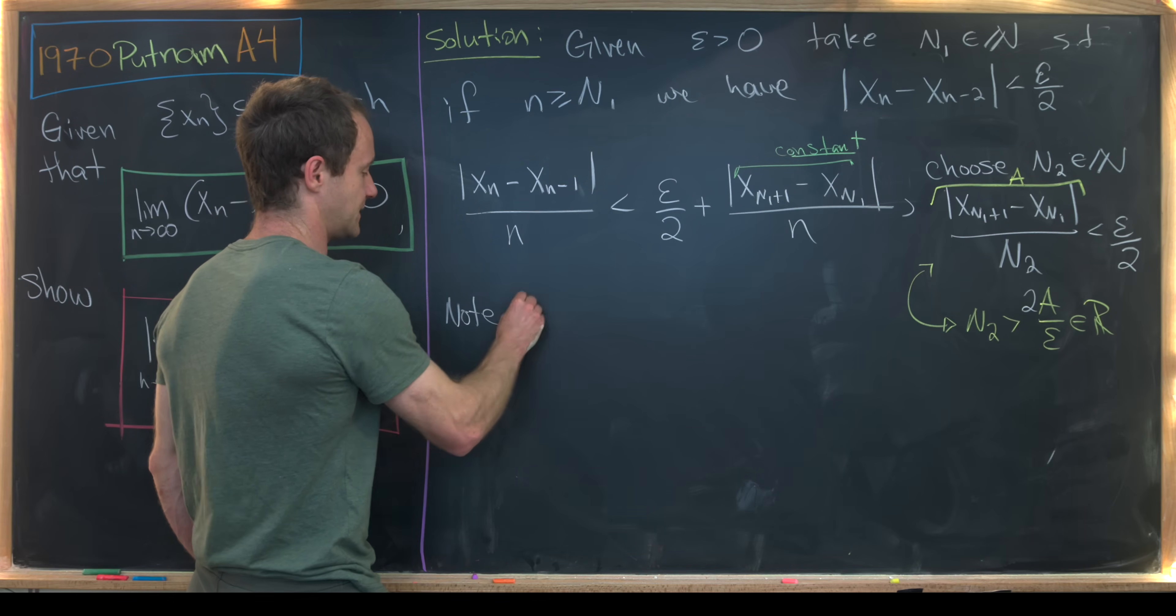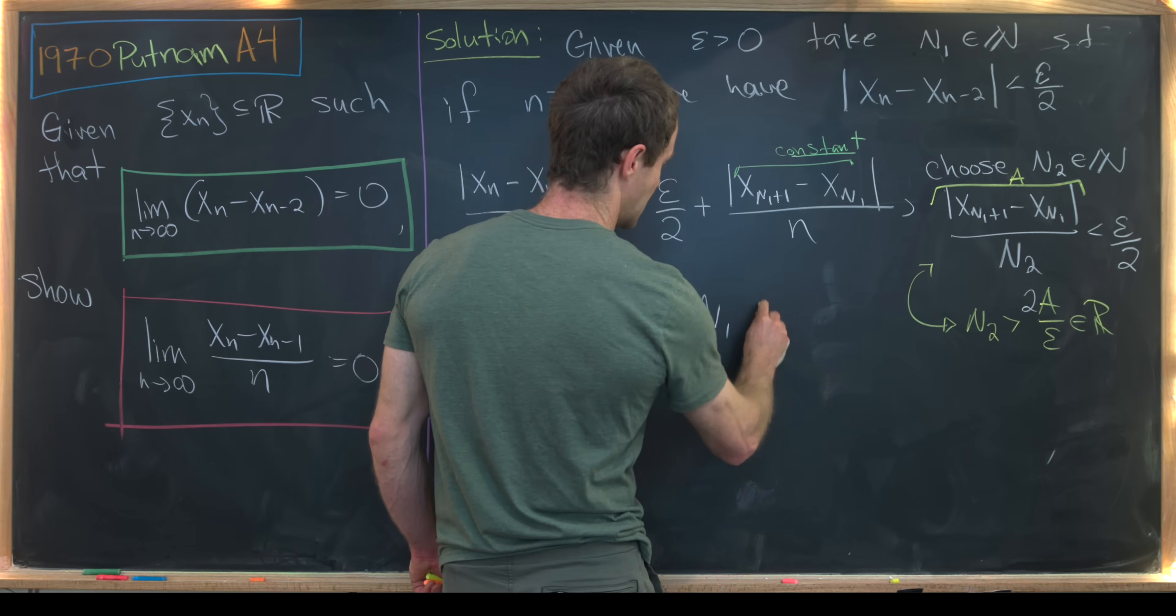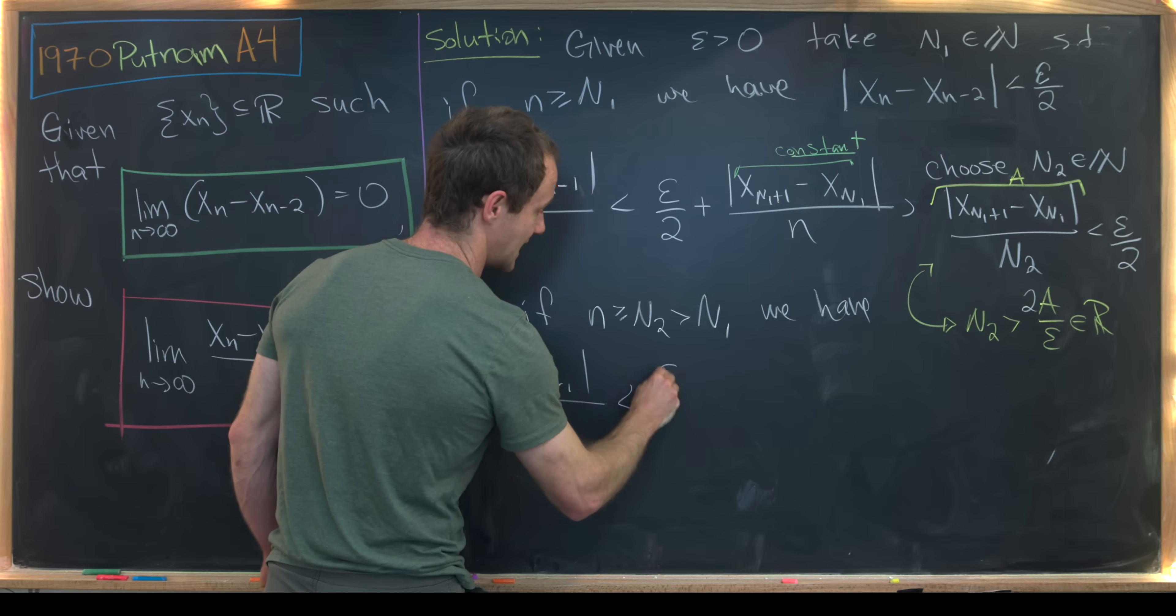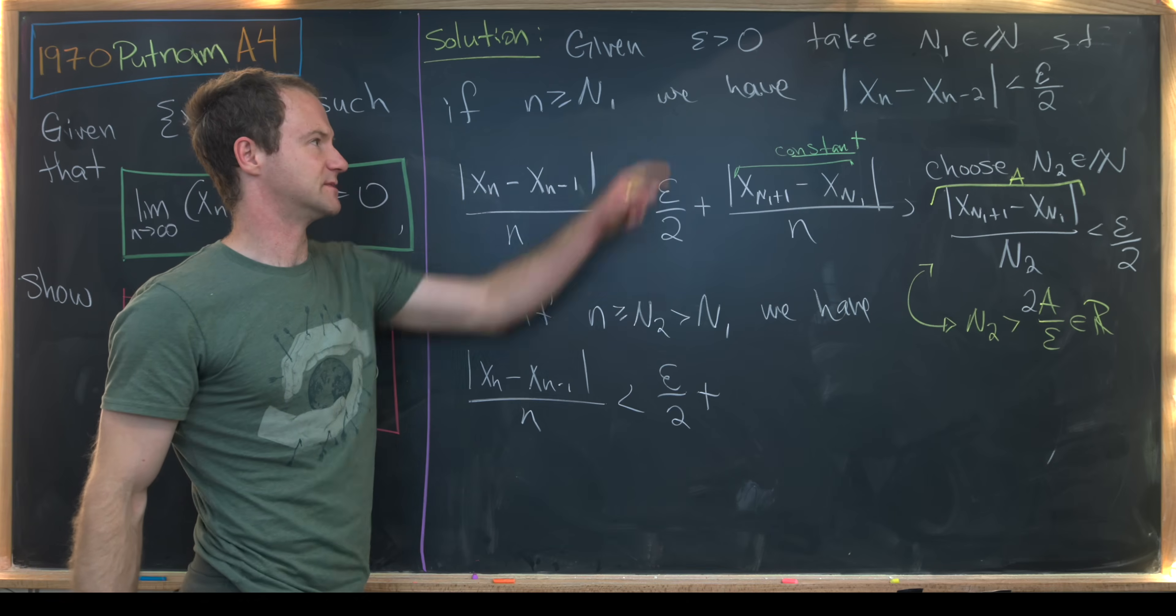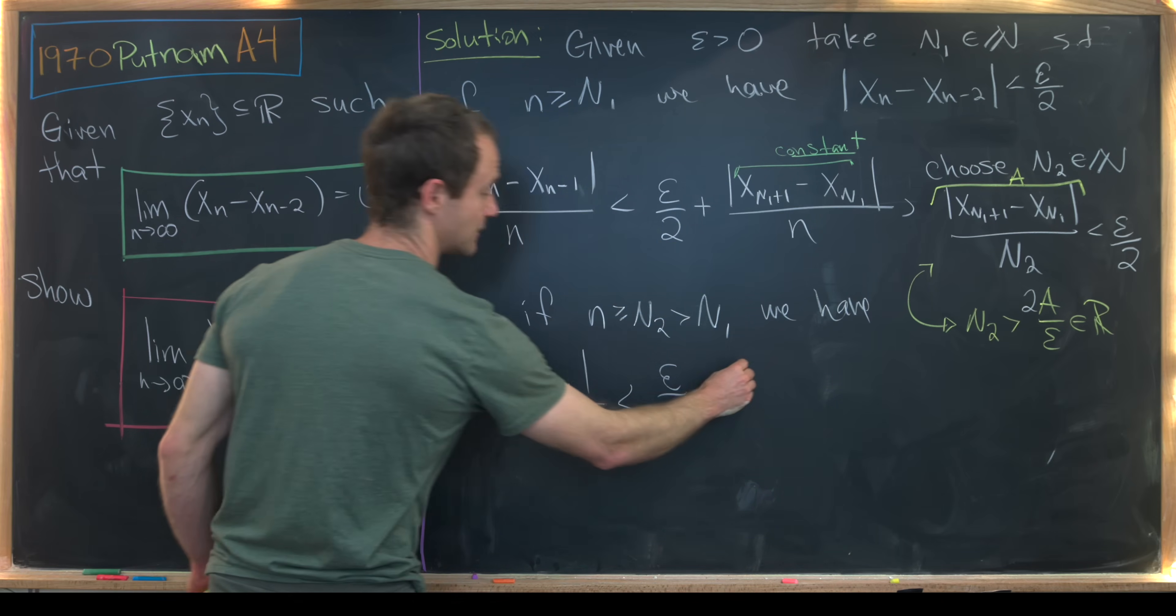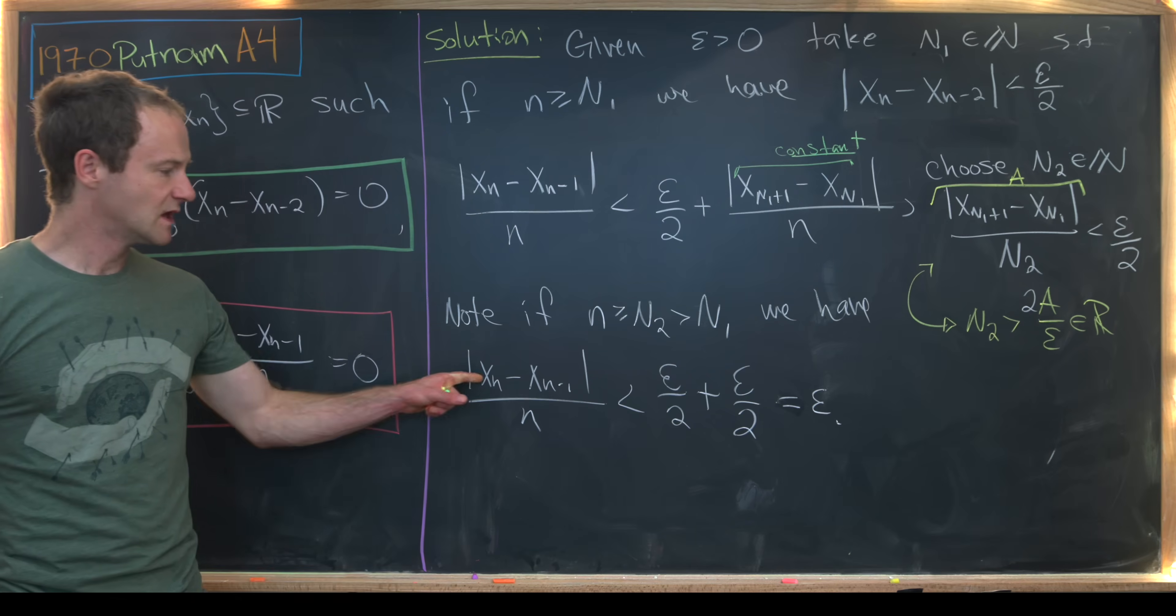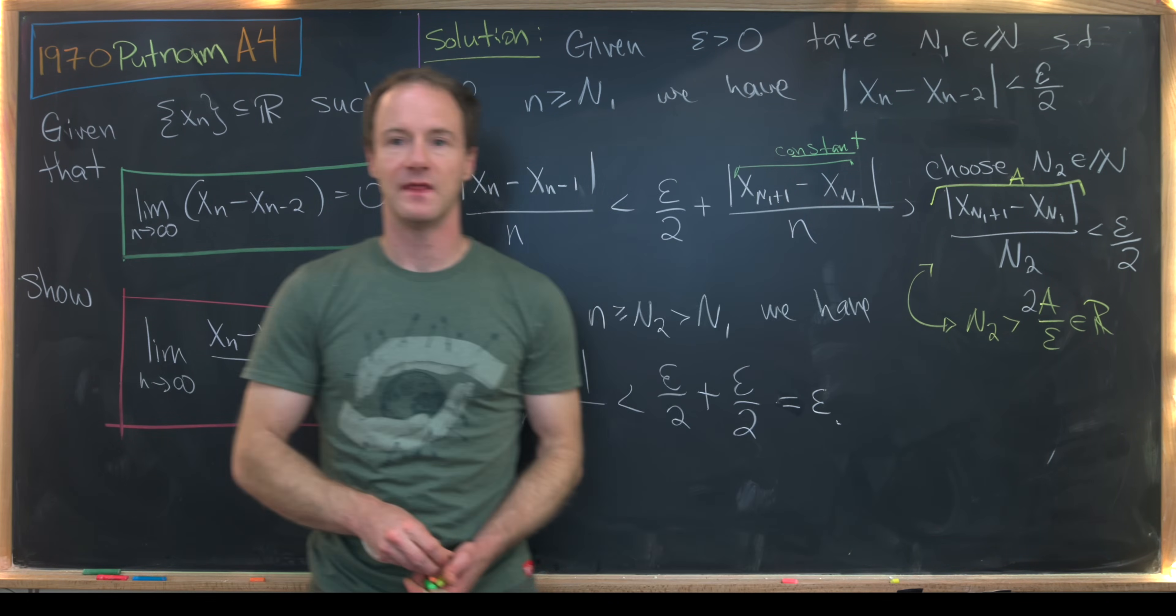So now notice if little N is bigger than or equal to N2, which is strictly bigger than N1, we have the absolute value of X n minus X n minus 1 over N is less than epsilon over 2 plus. So that epsilon over 2 comes from the last board, which essentially came from this bit right here, expanded it out. And then this thing right here, but we just chose our N2 so that that's also less than epsilon over 2. So we have our goal object is less than epsilon over 2 plus epsilon over 2, but that is epsilon. But that's exactly the inequality that we needed to end with to prove this limit. And that's a good place to stop.